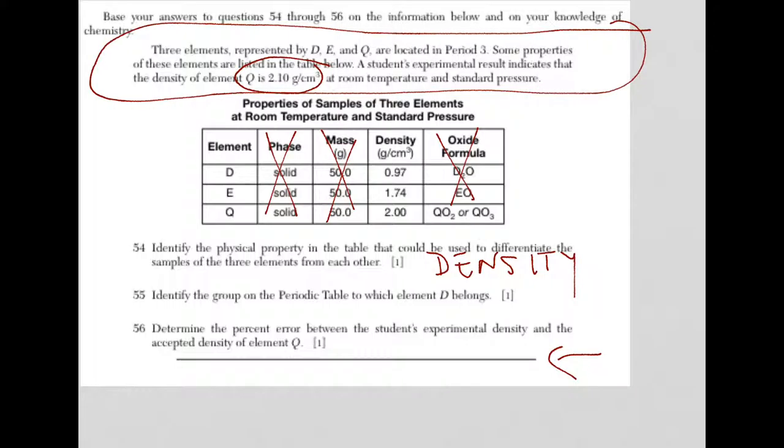We go to 55. It says to identify the group on the periodic table to which element D belongs. In order to figure out the group on the periodic table for element D, why don't we look at a piece of information here. We actually have two pieces.